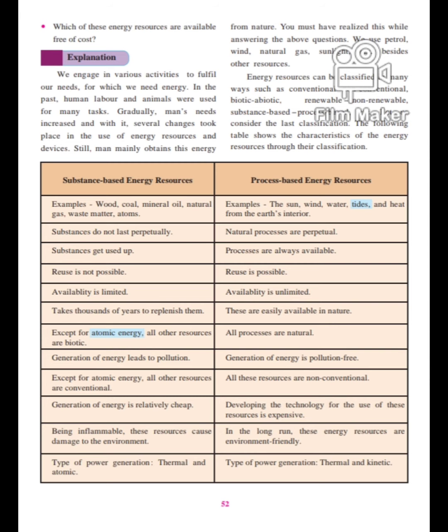Generation of energy from conventional resources is relatively cheap — like coal and wood, you get them at a cheaper rate. Being inflammable, these resources can cause damage to the environment. You must have heard of forest fires: when dried branches rub against each other due to friction, they cause forest fires. So it is inflammable. The two types of power generation from substance-based resources are thermal and atomic.